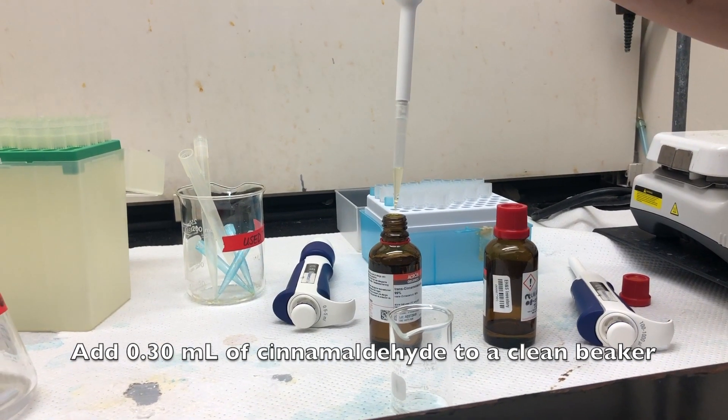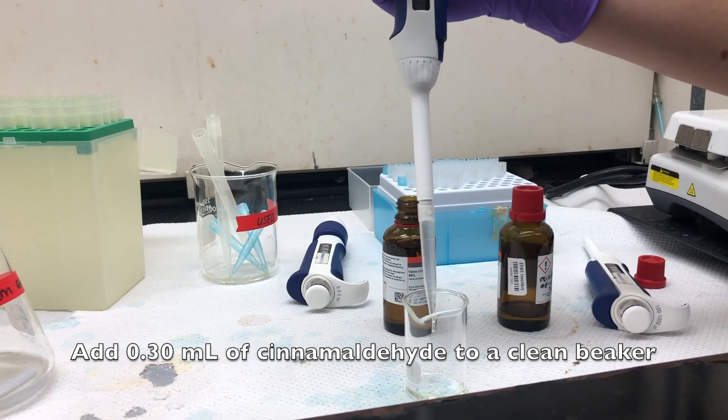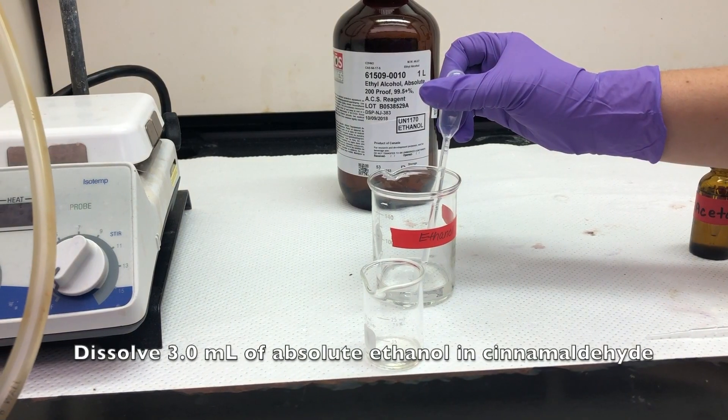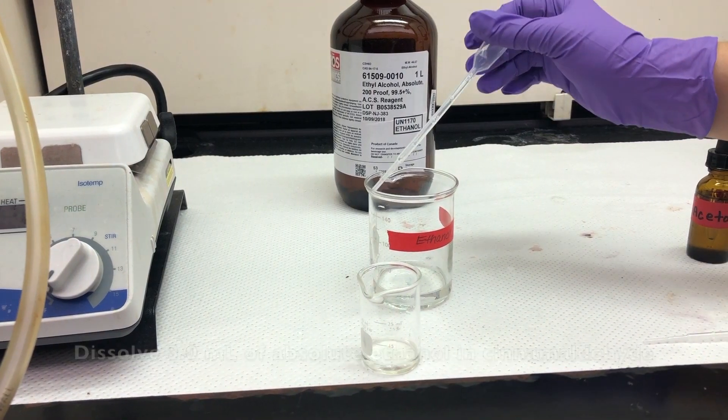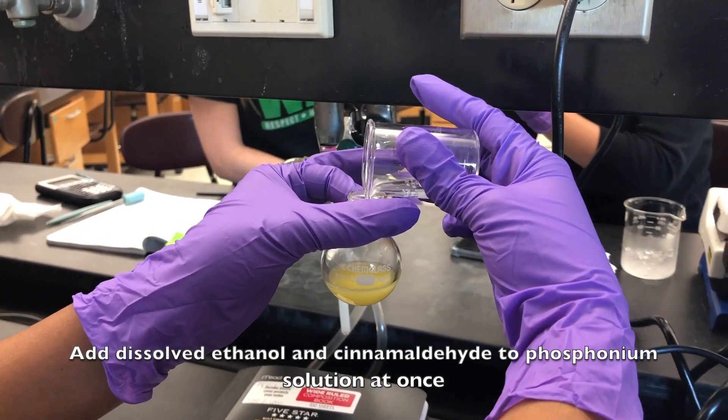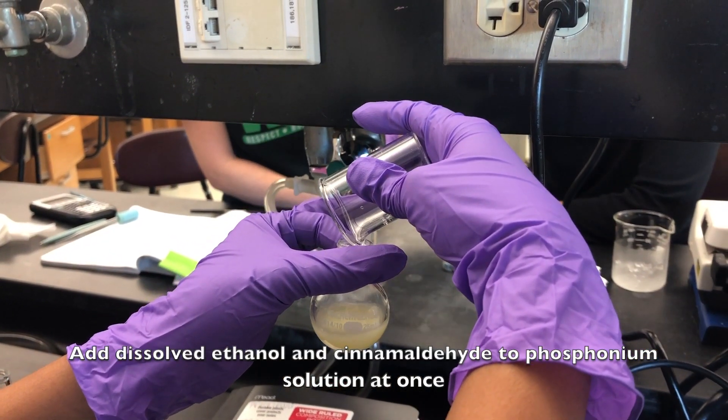Add 0.3 milliliters of somaldehyde to a clean beaker. Dissolve 3 milliliters of absolute ethanol in the somaldehyde. Add dissolved ethanol and somaldehyde to the phosphonium solution at once.